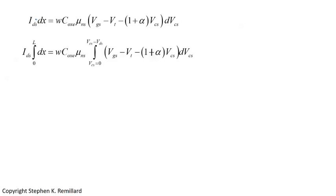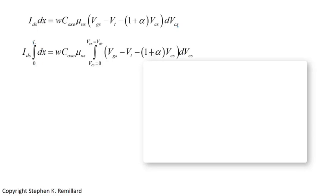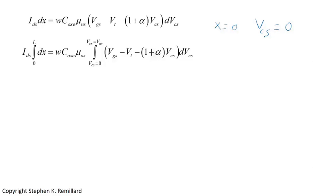Placing integral signs on both sides, we integrate x from 0 to L on the left, and V_CS from 0 to V_DS on the right. The limits agree because at x = 0 (the source), V_CS = 0; at x = L (the drain), V_CS equals the drain-source voltage V_DS.